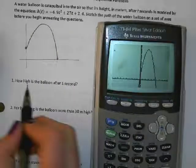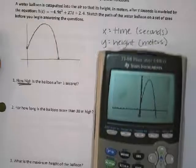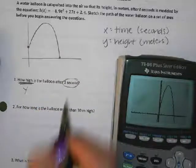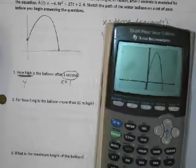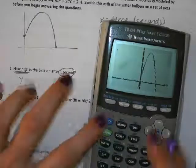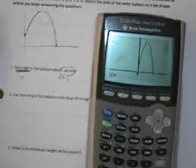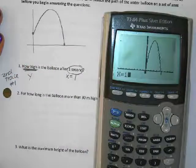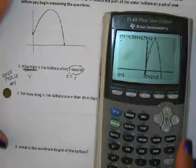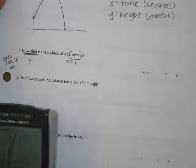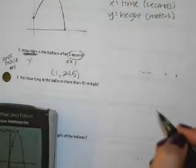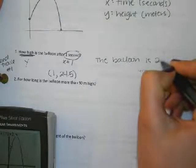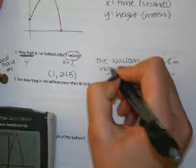The first question says how high — are they asking for a y value or an x value? They're asking for a y value. And what did they give us? One second — so x equals one. To plug in any x value we want, we do second trace, number one. That lets you plug in any x value, and we want to plug in one. The point I found was (1, 24.5), so: the balloon is 24.5 meters high after one second.